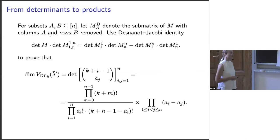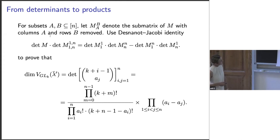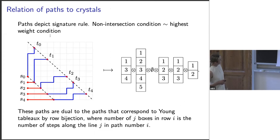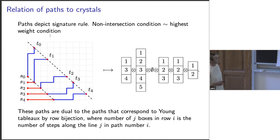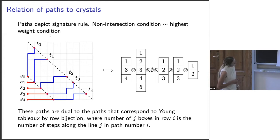This product formula is the same type as the one we found early on in the example of tensor powers of the spinor representation of SO(5). For GL, this product formula lets us express the dimension of the GL_k module parameterized by λ̄' — equivalently, the multiplicities in the tensor power decomposition — directly in terms of the row lengths of λ.